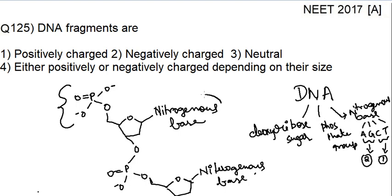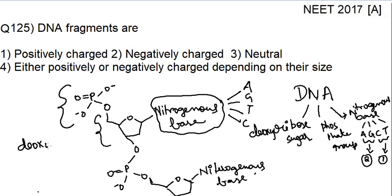This is the nitrogenous base attached here. I haven't drawn the structure because it will be really confusing for you. Nitrogenous base can be of four types: adenine, guanine, thymine and cytosine. And this is the ribose or deoxyribose sugar.